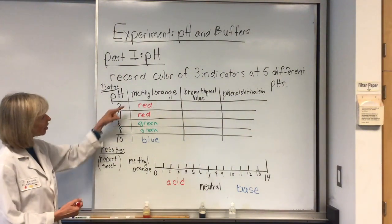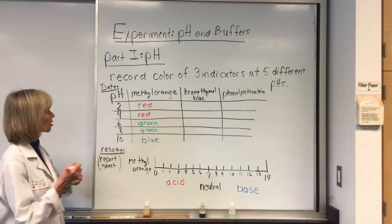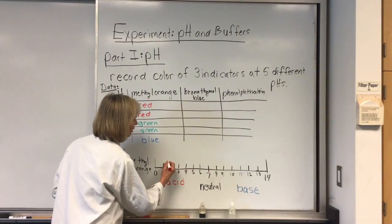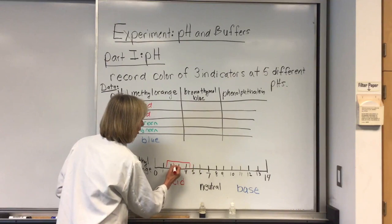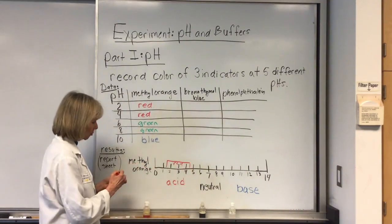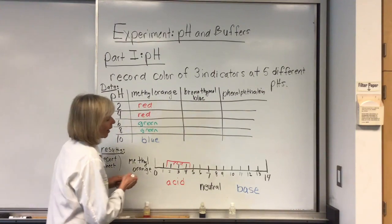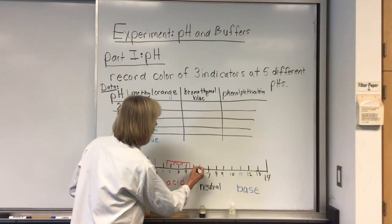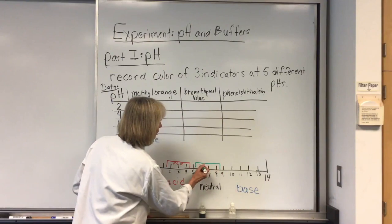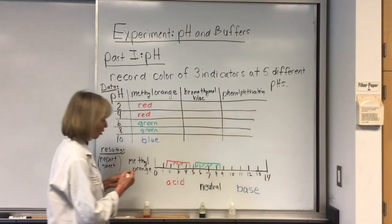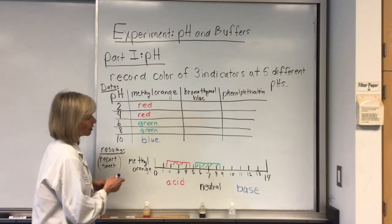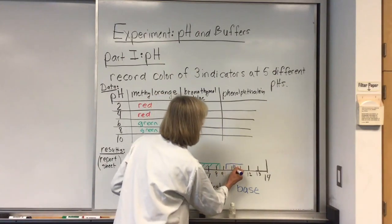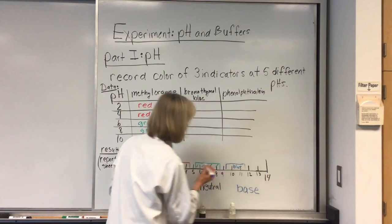What you'll do is: any solutions that are the same color, you're going to color in your chart. So from pH 2 and 4, we know that's red. Somewhere we're not sure exactly where the change takes place, but this area is red. You can either write in the word red if you don't have a colored pen, or you can color code it. Between pH 6 and 8, we know it's green, so I'm leaving a little space there. And then somewhere between 8 and 10 it turns blue — we're not sure how far that extends.